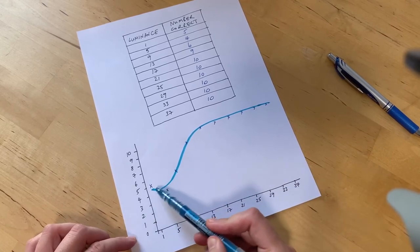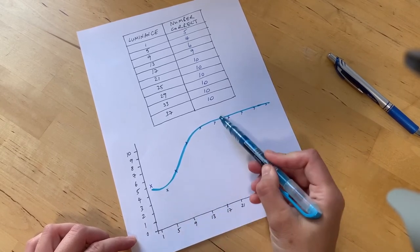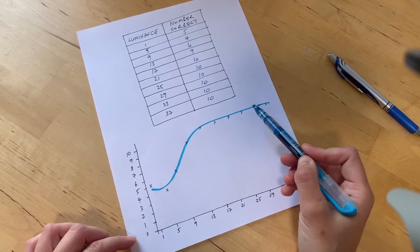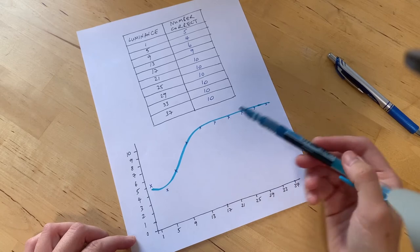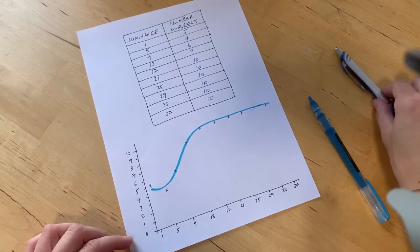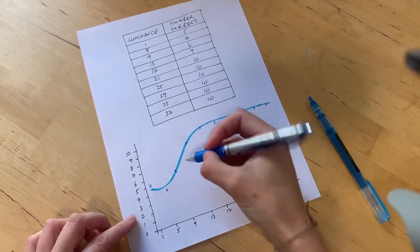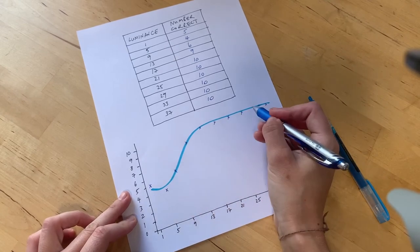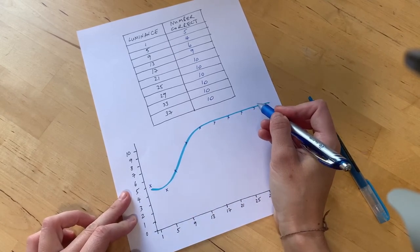So here I'm around chance and up here I'm getting them all right and in between here is my inflection point, the point where it changes sharply from chance level to becoming always correct.